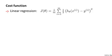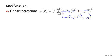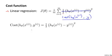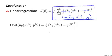Back when we were developing the linear regression model, we used the following cost function. I've written this slightly differently, where instead of 1 over 2m, I've taken the 1 half and put it inside the summation. Now I want to use an alternative way of writing out this cost function — instead of writing out the squared error term, let's write cost of h of x comma y, defined to be equal to 1 half of the squared error.